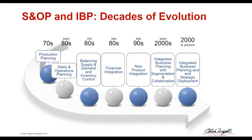A couple of key things distinguished IBP: financial integration throughout the process — product management talking about the earnings roadmap, demand management talking about achieving margins, supply talking about costs, and projected P&Ls — so that by the time you reached the management business review you were discussing the profitability of the business. Around the 2000s, market segmentation came in, then collaboration primarily on the customer side and with suppliers, and more recently strategic deployment.